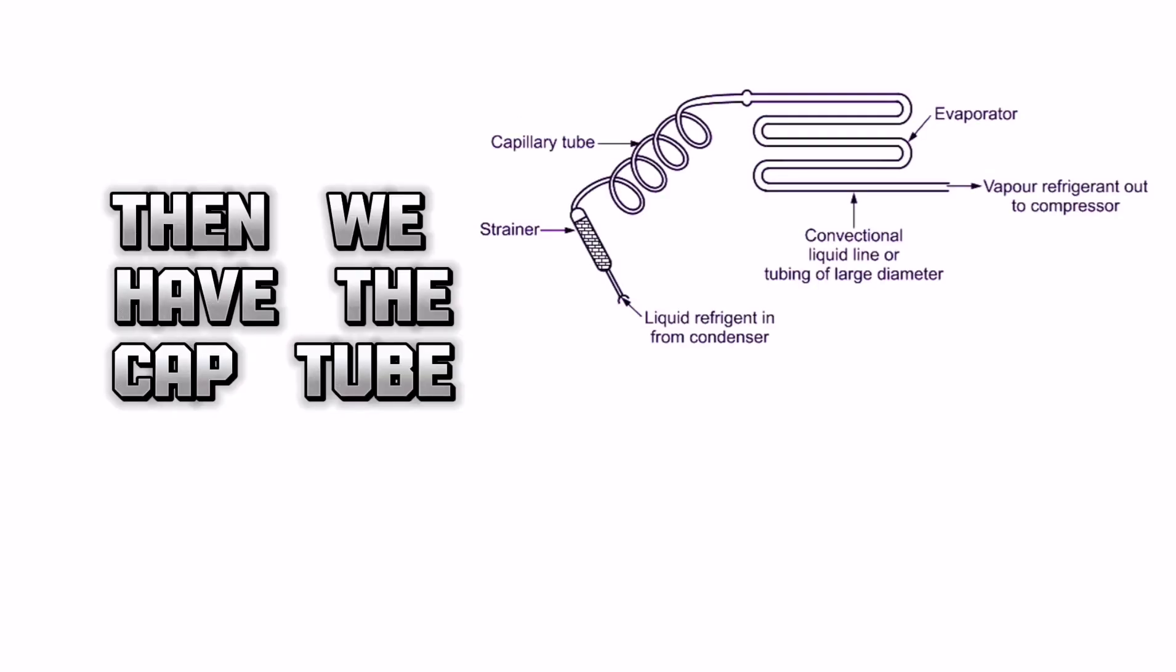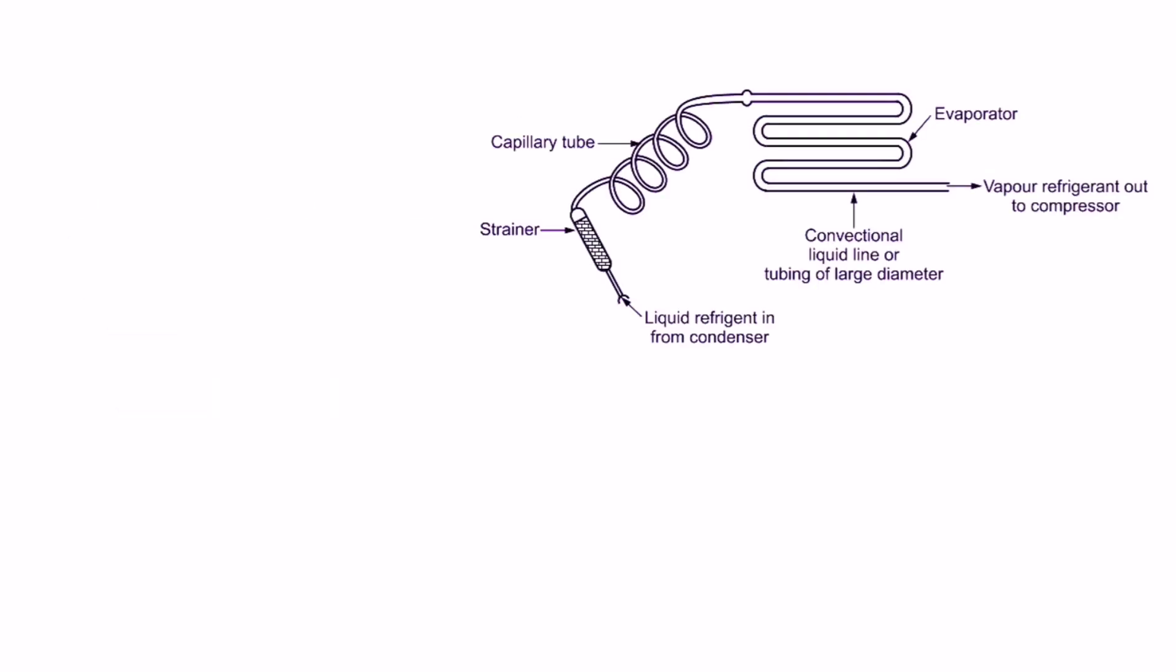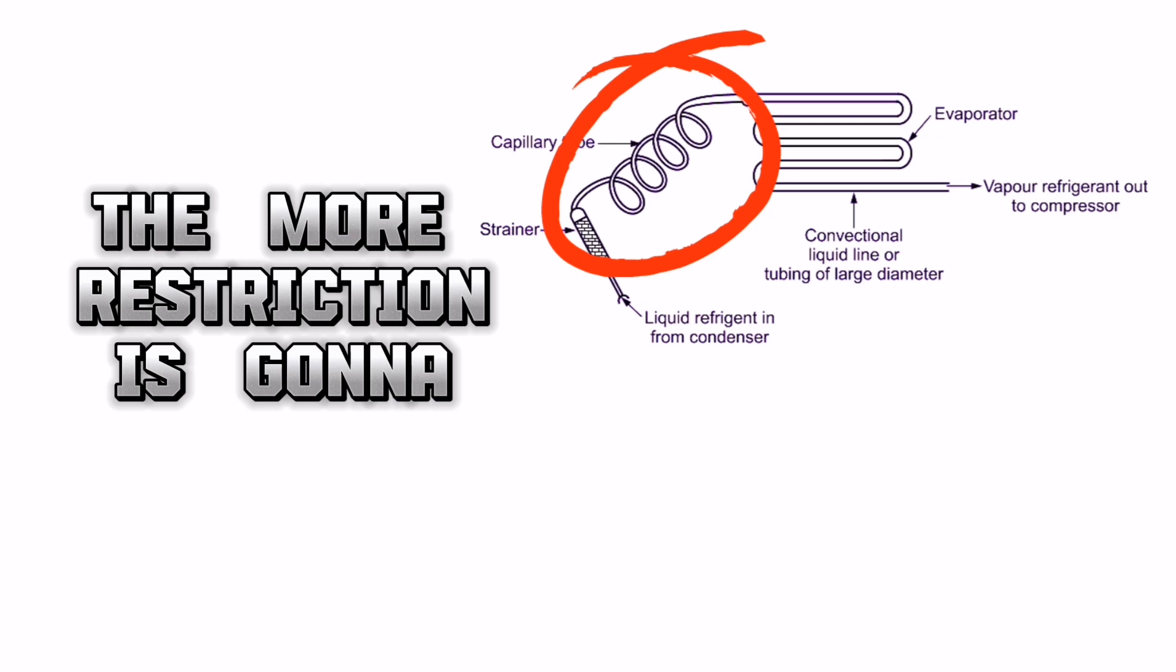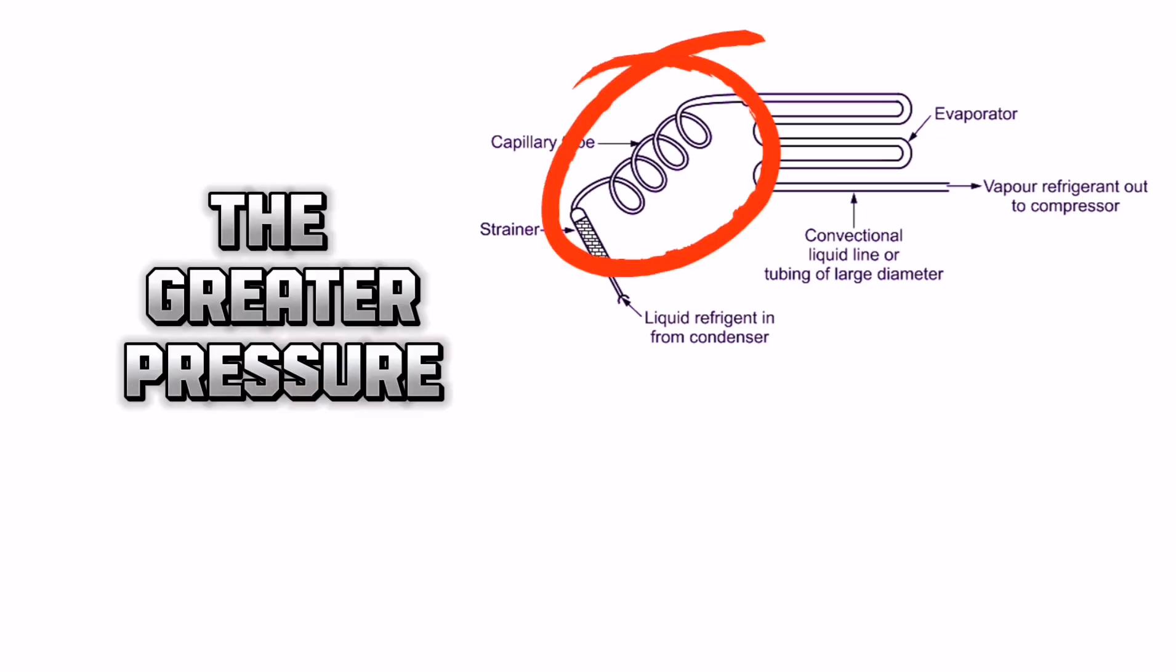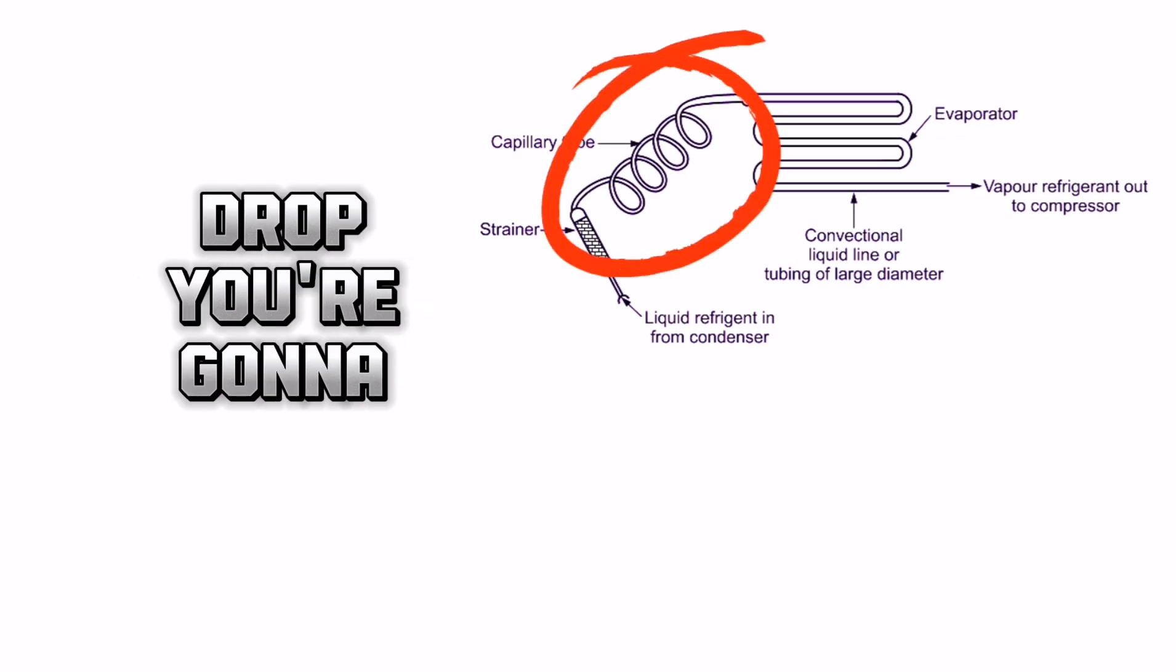Then we have the cap tube, capillary tube. All this is, is just a long piece of tubing. The longer it is, the more restriction it's going to have. The smaller the inside diameter is, the greater pressure drop you're going to have.